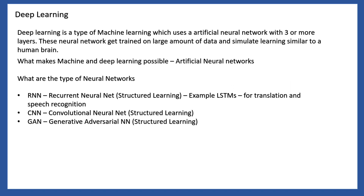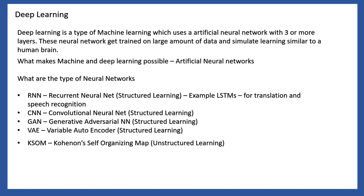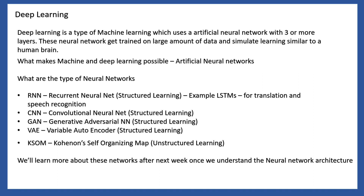We also have variational autoencoders, which involve structured and unstructured neural networks with labeled data. Self-organized maps are another example using unlabeled data with a wide range of data inputs. We will also discuss neural network architecture in detail.